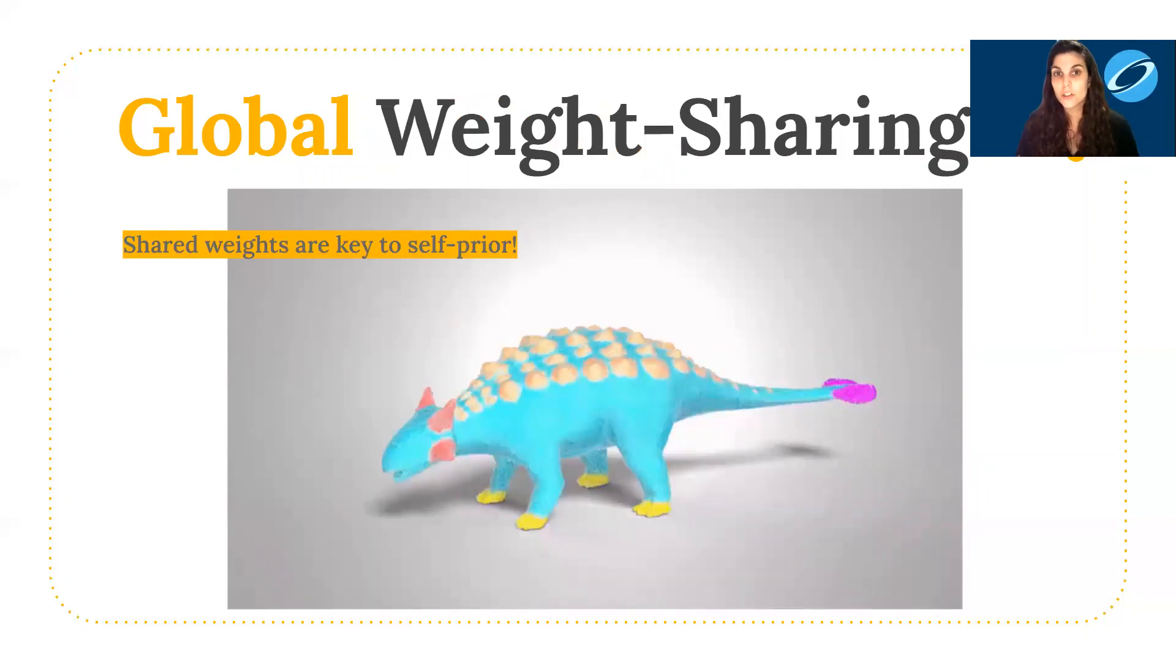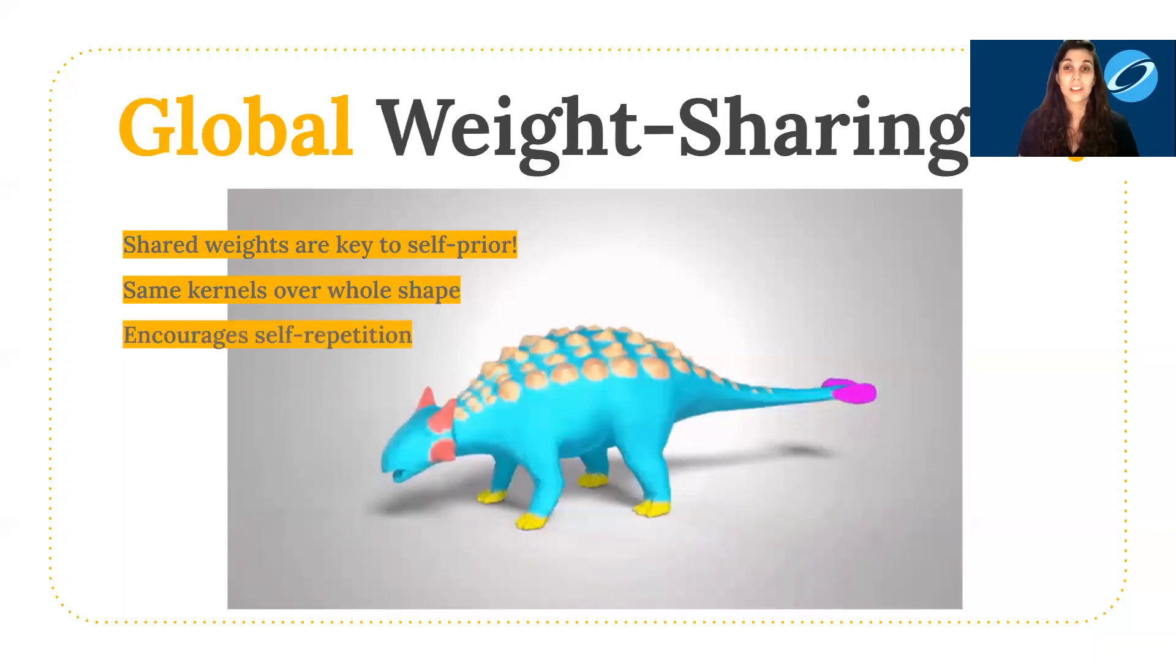Central to the self-prior is the global weight sharing structure of the CNN. On the one hand, convolutions are applied locally to extract salient features. On the other hand, the same local kernels are utilized over the entire shape. Optimizing kernel weights globally across the entire shape's surface inherently encourages local scale geometric self-repetition.